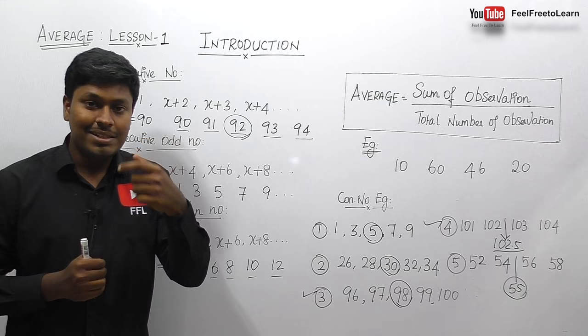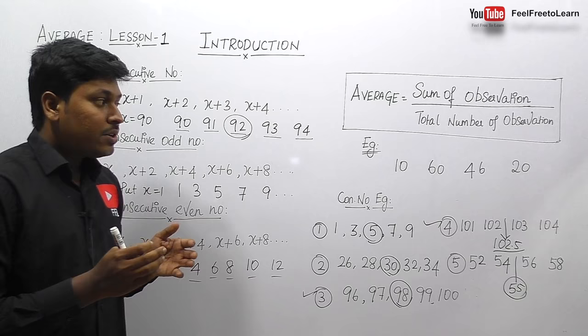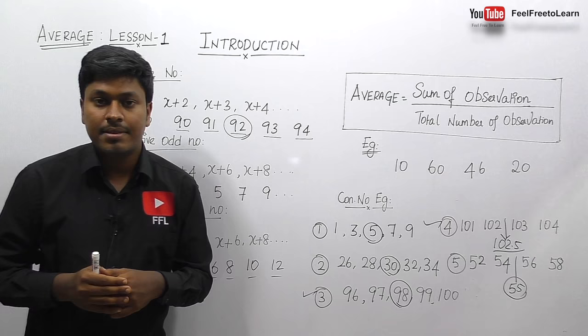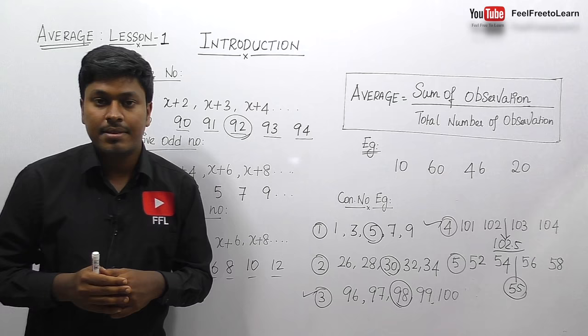Remember this one simple concept: if the numbers are consecutive, consecutive odd, or consecutive even, the center number will be the average. Don't forget to watch all the remaining lessons — lesson 3, lesson 4, and all seven different lessons. Share this video with your friends so they can learn too. Thank you so much for watching.